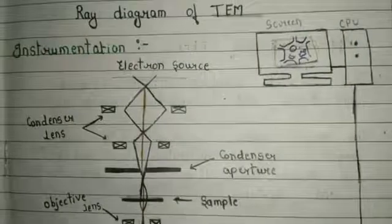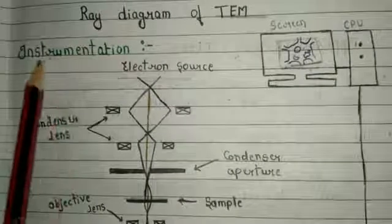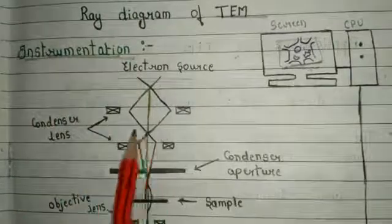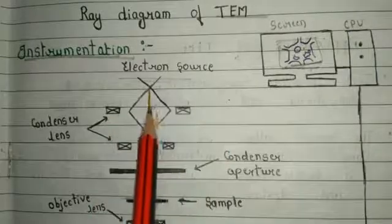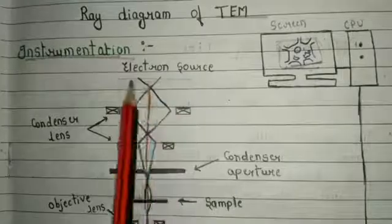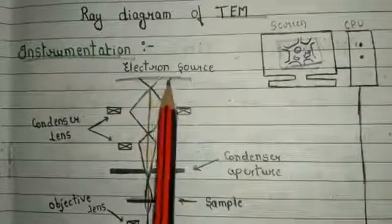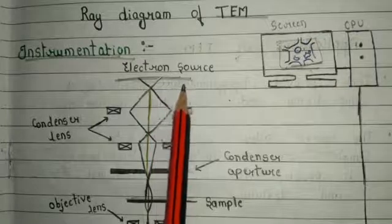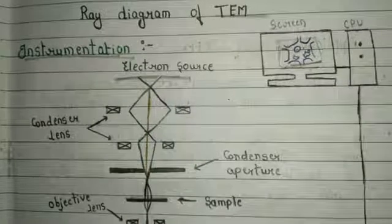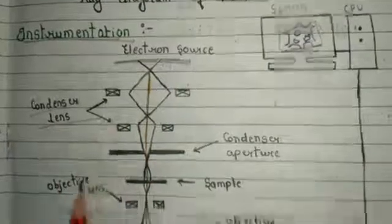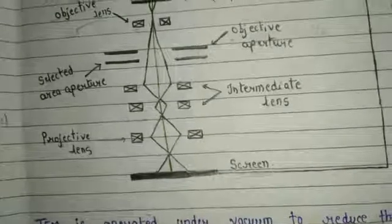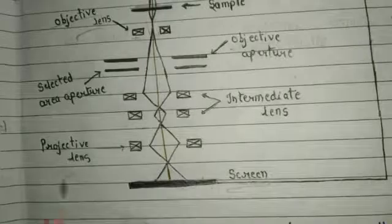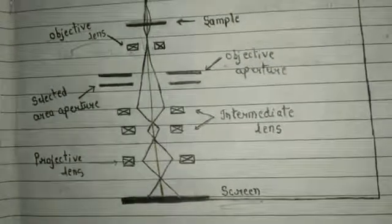Now moving to the instrumentation of electron microscopy. This is a ray diagram of transmission electron microscopy and its instrumentation part. Some important parts we will discuss are: electron source, condenser lens, objective lens, and projector lens, and finally the screen. These four are very important parts of the instrumentation.